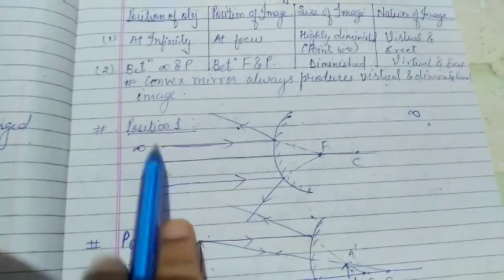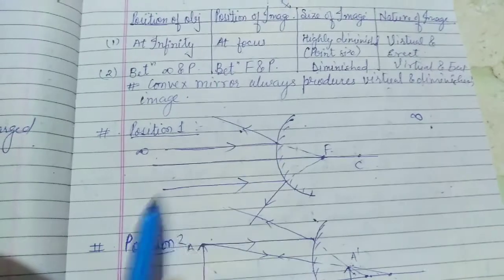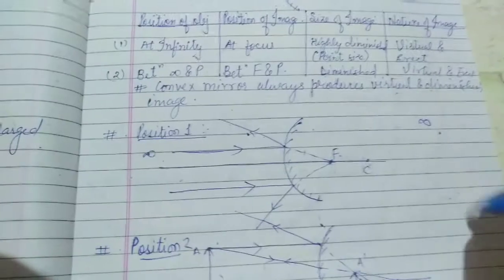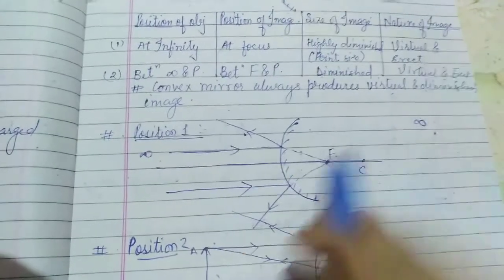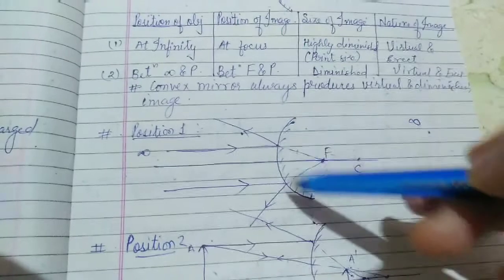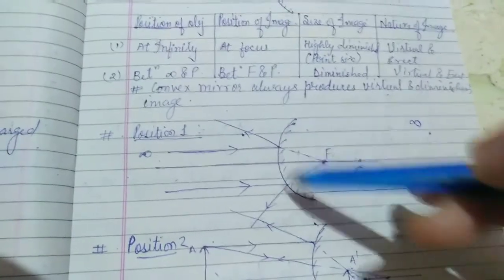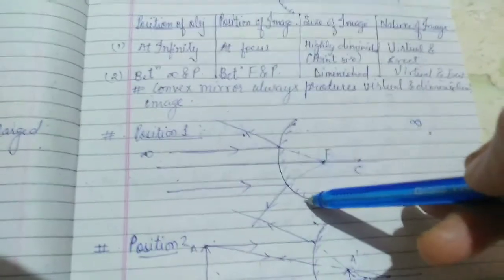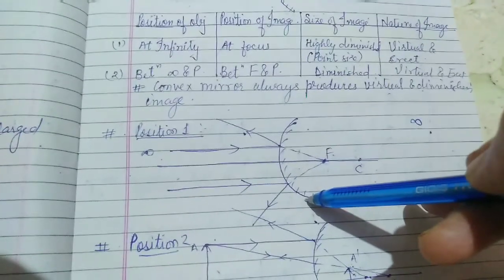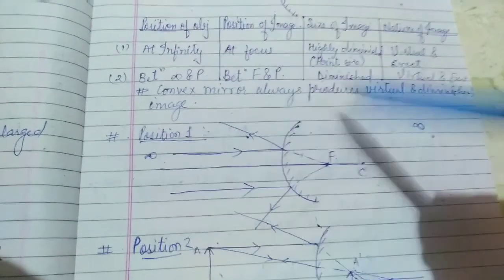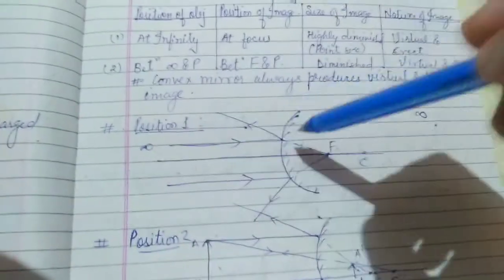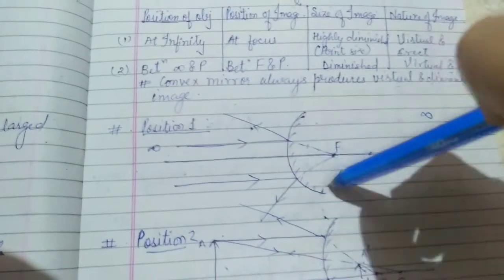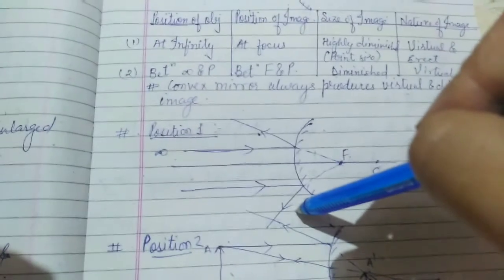We know that when rays are parallel to the principal axis, after reflection they will meet at focus. For the convex mirror, the outer side is made reflecting, so it is going to diverge the rays outward. Because of this construction, the reflected rays never meet each other.